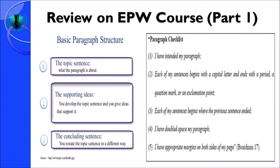After reviewing the six traits, we come to basic paragraph structure. A paragraph has three parts: the topic sentence, the supporting ideas, and the concluding sentence. The topic sentence functions to tell the readers what the paragraph is about. The supporting ideas develop the topic sentence and give ideas that support it. The concluding sentence restates the topic sentence in a different way.